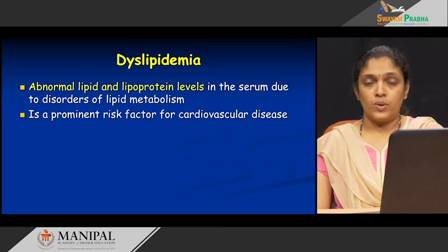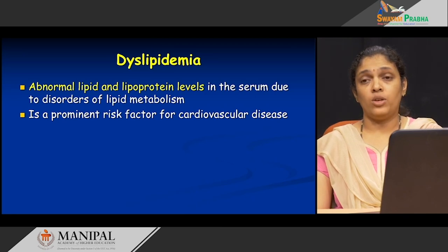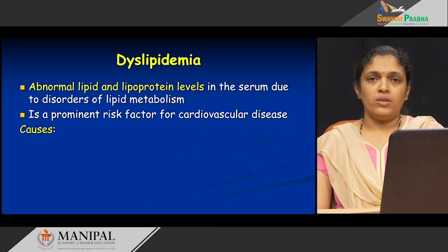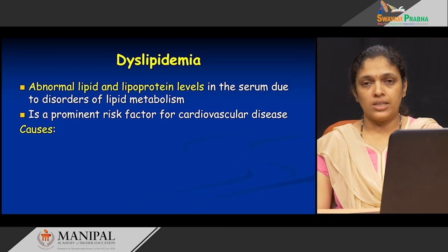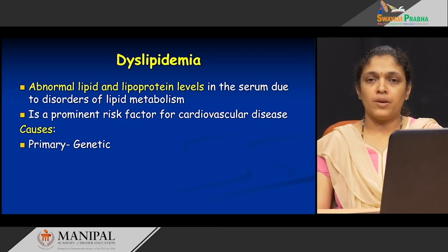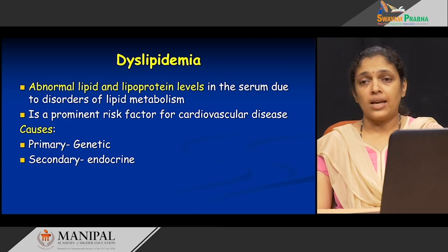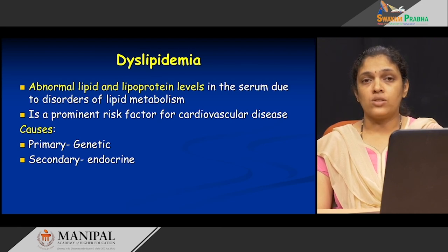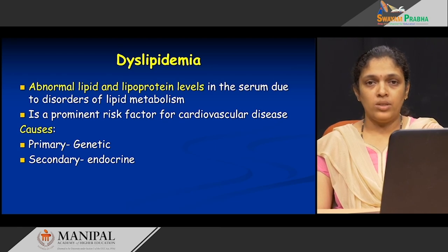Why do we have to do this? Once we know that there is an excess or a decrease in the levels of lipid, it will tell us about the risk factor of having a cardiovascular disease. Now, there could be different causes for dyslipidemia. The most important is the primary cause, where you do not know the cause and it is thought to be of genetic origin. Another reason is secondary causes — secondary to some other existing disorders, such as diabetes mellitus or thyroid abnormality, in which there could be an abnormal lipid profile.